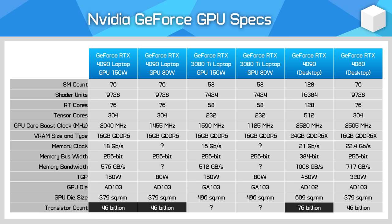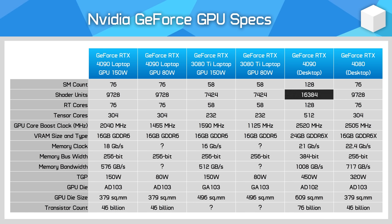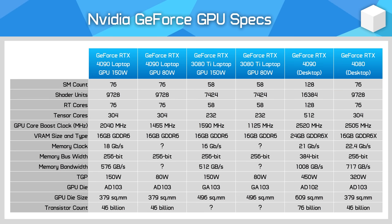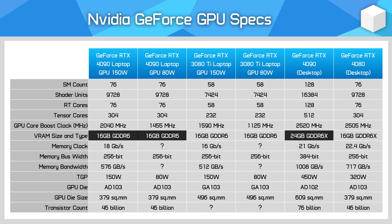This brings with it a substantial reduction in CUDA core count, dropping from a whopping 16,384 to just 9,728 in the laptop model, along with associated reductions in tensor cores, RT cores and L2 cache. The memory subsystem is also a lot smaller on the laptop model. Here we get just 16GB of GDDR6 memory on a 256-bit bus versus 24GB of GDDR6X memory on a 384-bit bus.